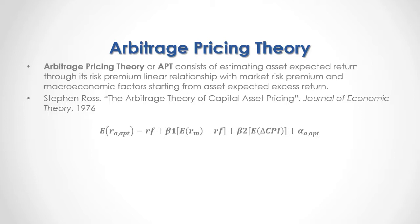In this example, the expected change in CPI has been included. CPI corresponds to the Consumer Price Index; therefore, its change corresponds to inflation when positive, and deflation when negative. The formula also includes alpha, which is the asset expected excess return through the Arbitrage Pricing Theory.